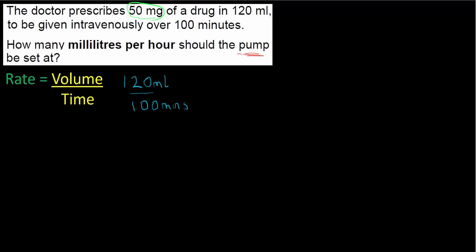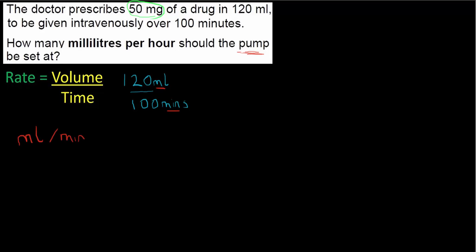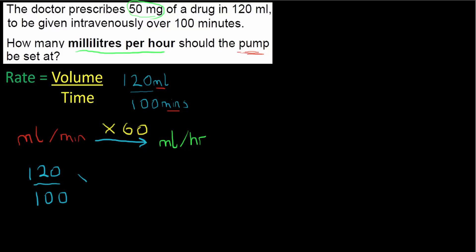We do have a problem before we can proceed. The units we have are millilitres and minutes, but the question clearly says we must give our answer in millilitres per hour. To convert from millilitres per minute into millilitres per hour, we're going to have to multiply our formula by 60. Mathematically, we carry out 120 over 100 times 60.